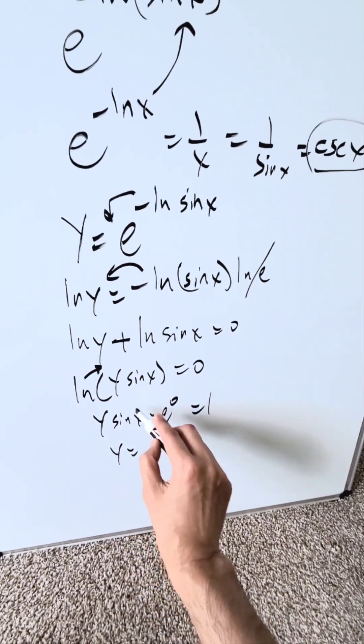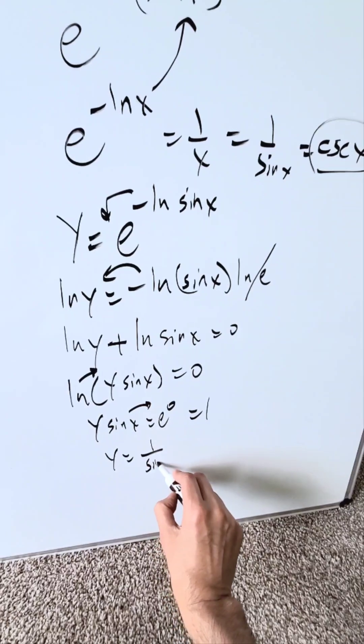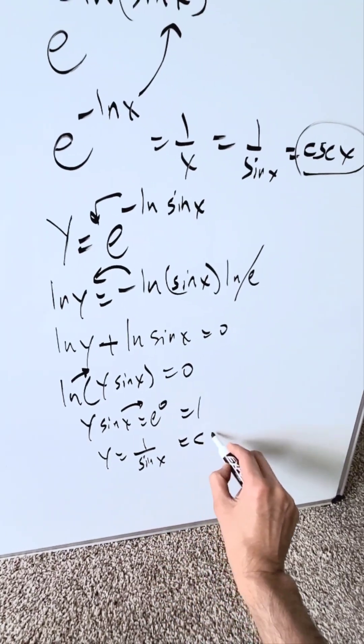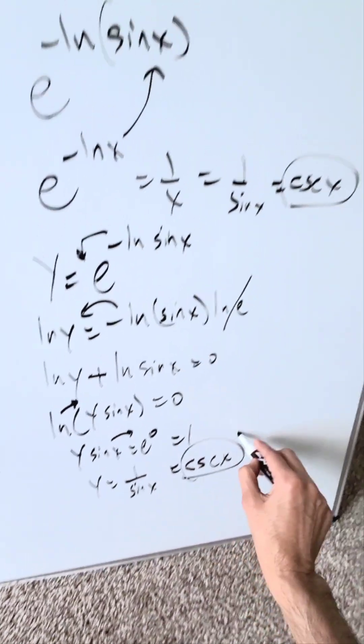I have y equals, push this on the other side, and it'll divide 1 over sin x. The reciprocal being cosecant x, and we arrive at the same answer.